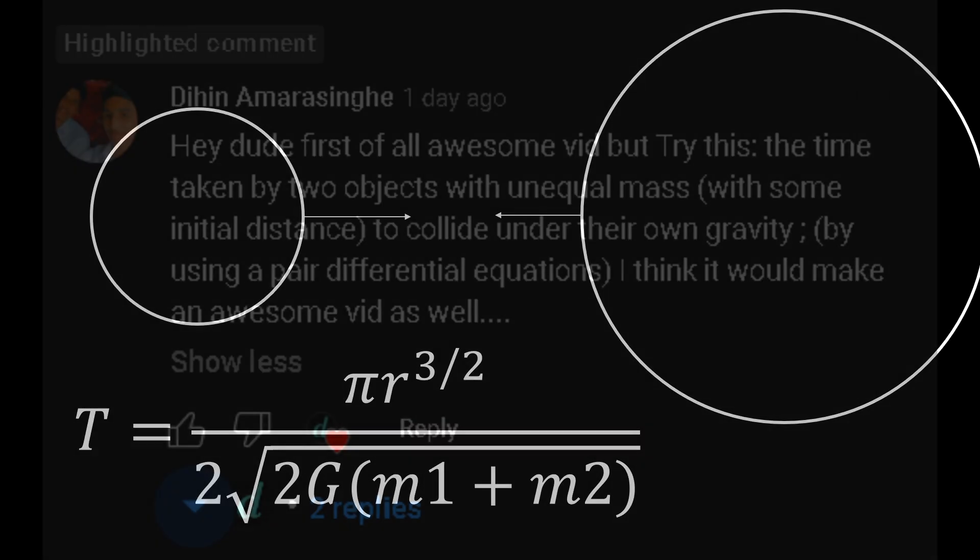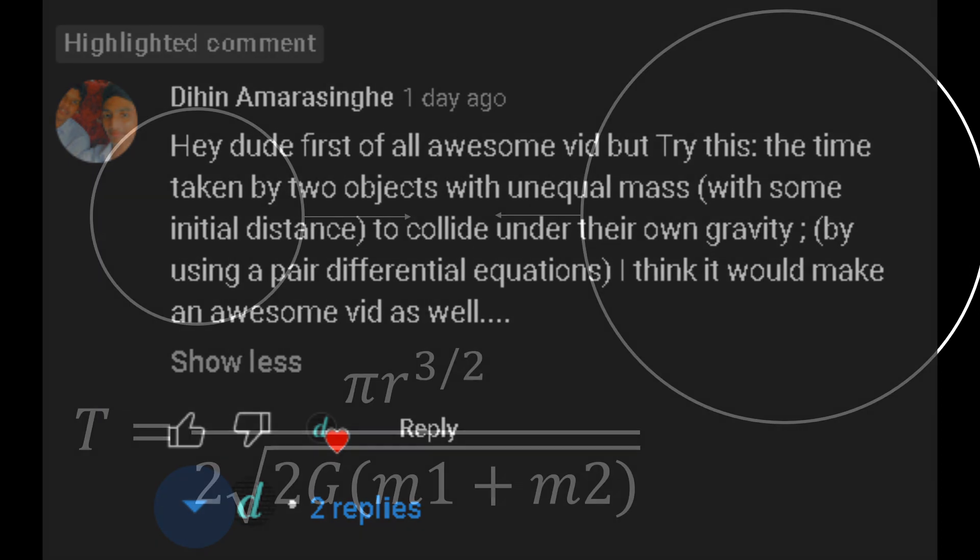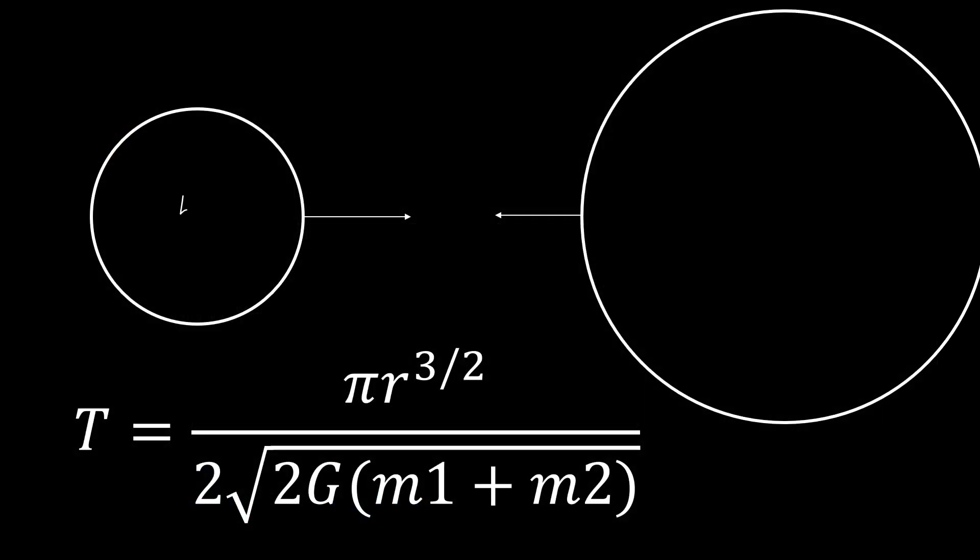It's very closely related to a previous problem that we've done on the channel, so we're going to use that result to help us. Now this problem is we have two objects with two different masses, so this will be m1, this will be m2, and the distance between them is r, and we want to find how much time it takes for them to collide.